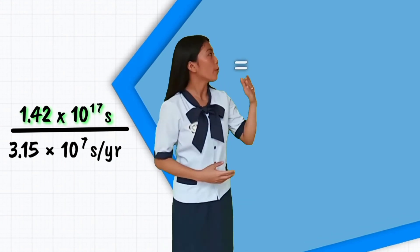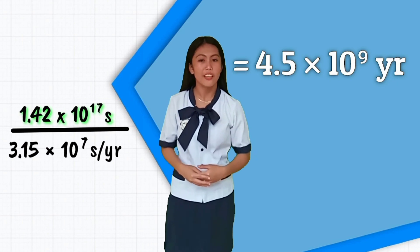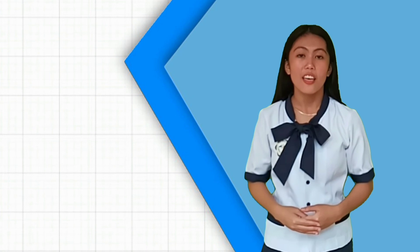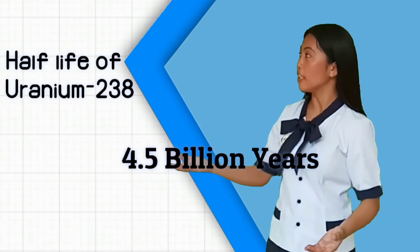The answer is 4.5 times 10 to the 9th power years. Thus, the half-life of uranium-238 is 4.5 billion years.